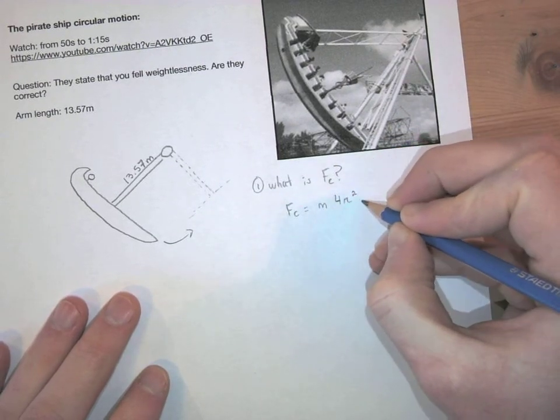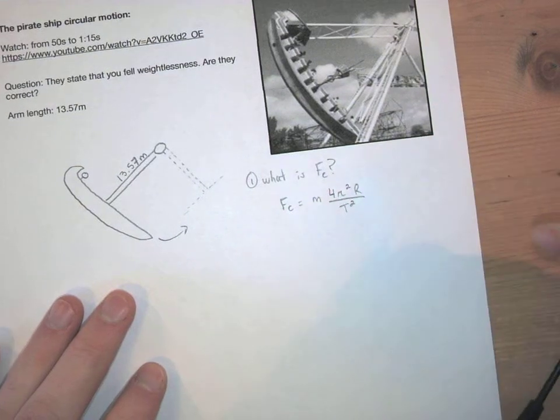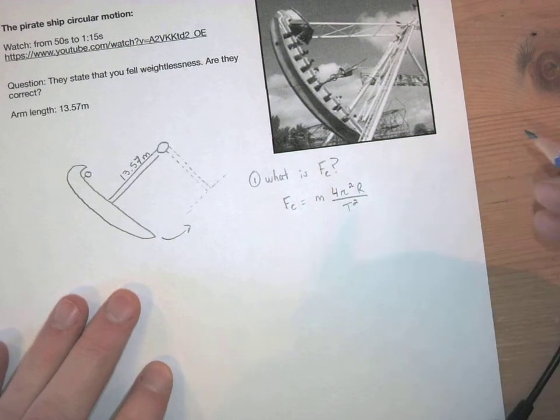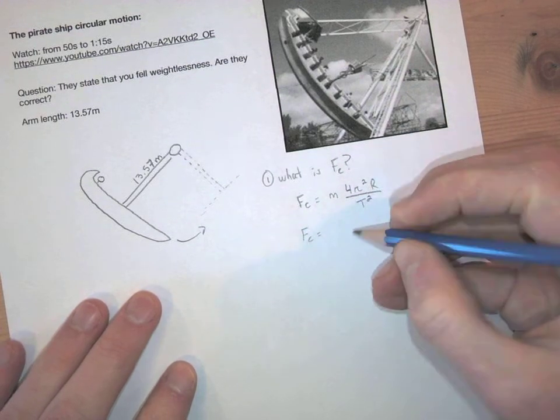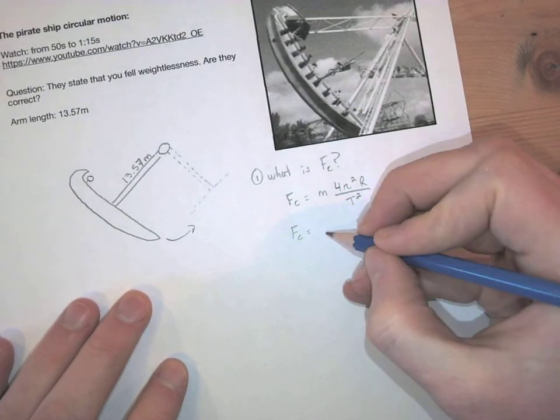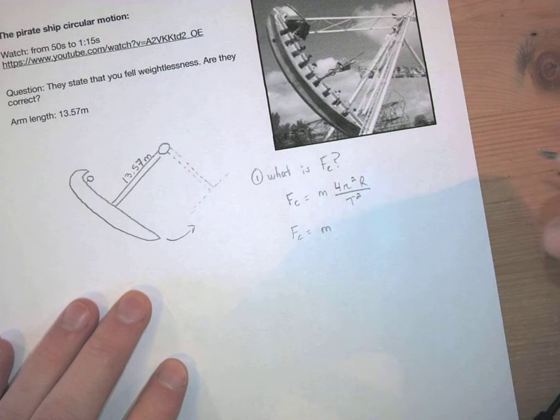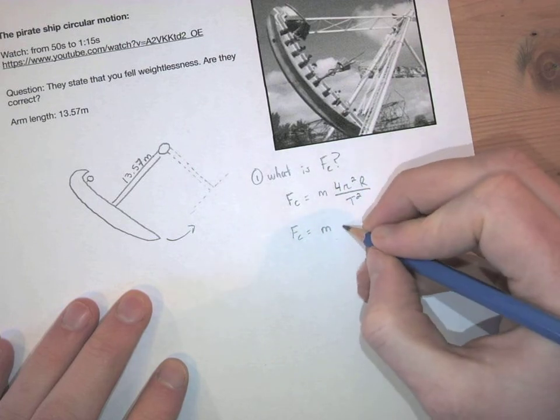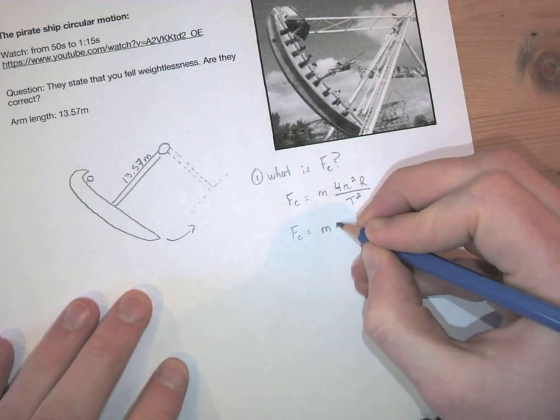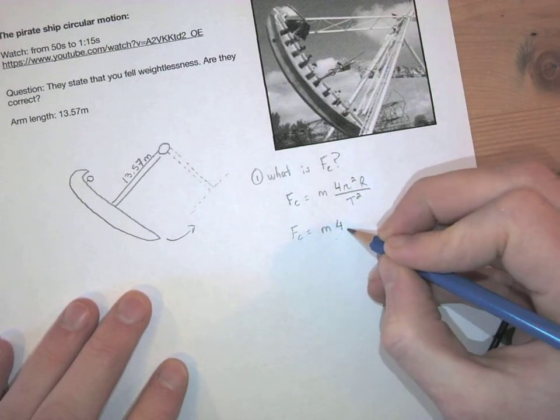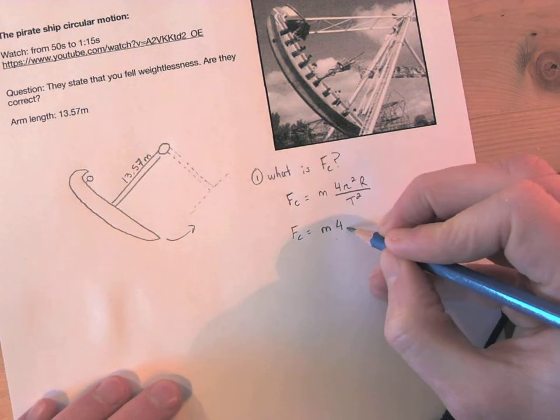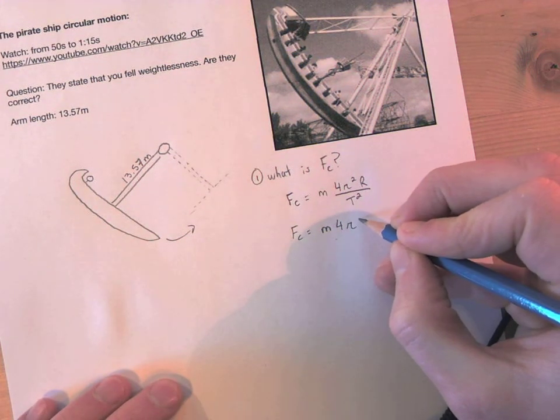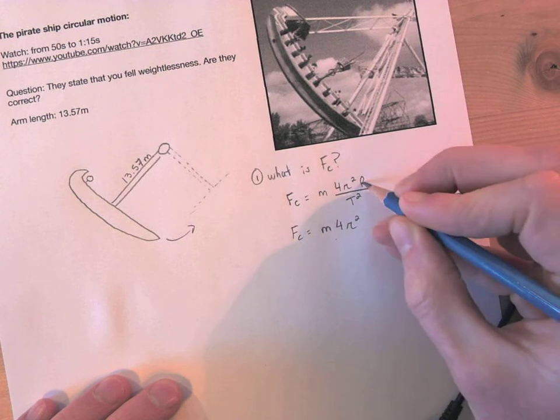So I'm not going to use that equation. I'm going to use the m 4 pi squared r over t squared equation. So I'll see if I can find out any information here. Our mass of our person, let's just leave it as a variable. It could be anything.